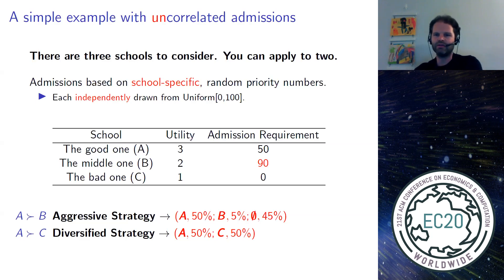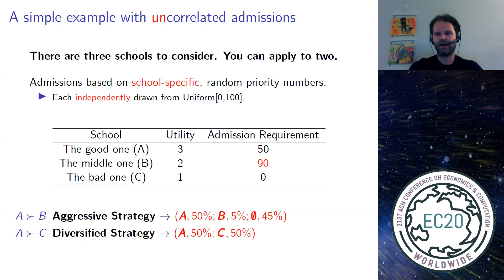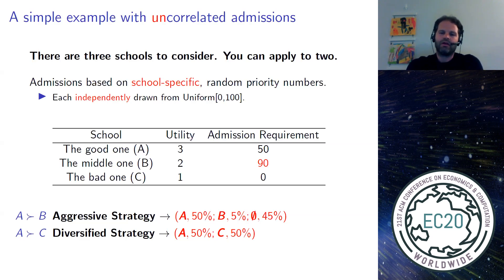If I apply using the diversified strategy, I'm still guaranteed to get into the bad school and in half the cases I'm accepted to the good school — 50-50. If I apply using the aggressive strategy, in half the cases I get into the good school, in 10% of the cases I get into the middle school, but half of the time when I get into the middle school I also get into the good school, so only 5% of the time I attend the middle school. This means that any model of choice with the IIA property rules out the possibility that an applicant chooses the aggressive strategy in one scenario and the diversified strategy in the other.